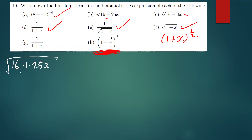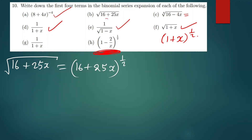The square root of 16 plus 25x can also be written as (16 + 25x) raised to the power half. This can be simplified further by factorizing 16, so we get 16 outside the brackets times (1 + 25/16 x).